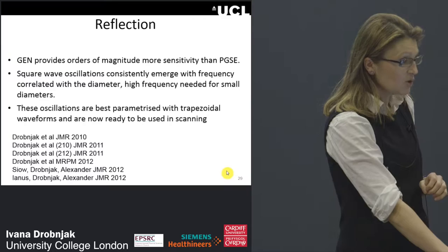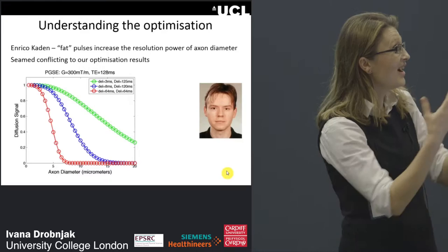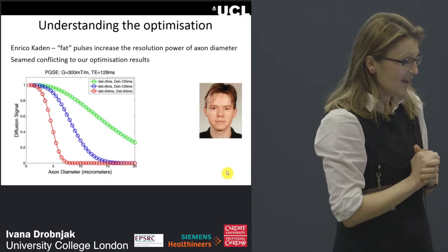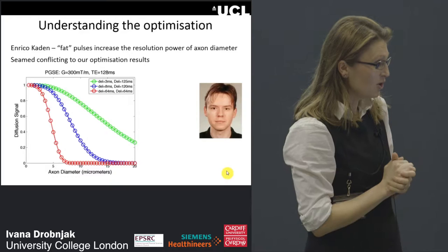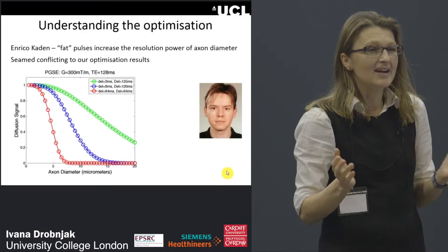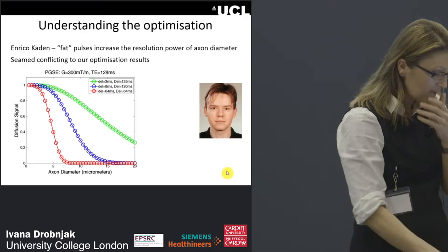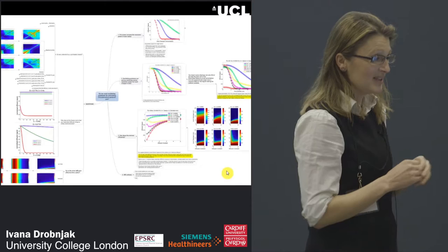At that point I thought I was done and went on maternity leave. When I came back after six months, Enrique Carden had started his postdoc with Danny and gave a talk in which he said the most sensitive sequence to estimate axon diameter is the fat PGSE. I was really confused — I had assumed we needed high-frequency OGSE — and these results seemed to conflict directly with our optimization results. This prompted a lot of brainstorming.